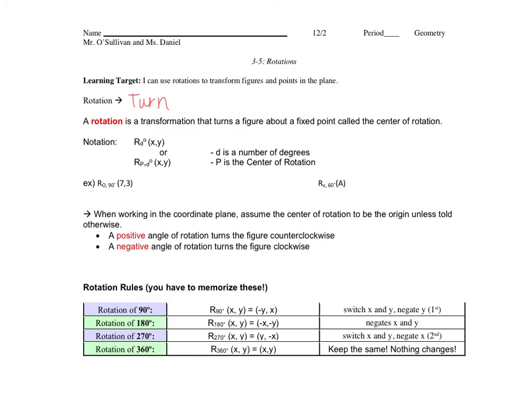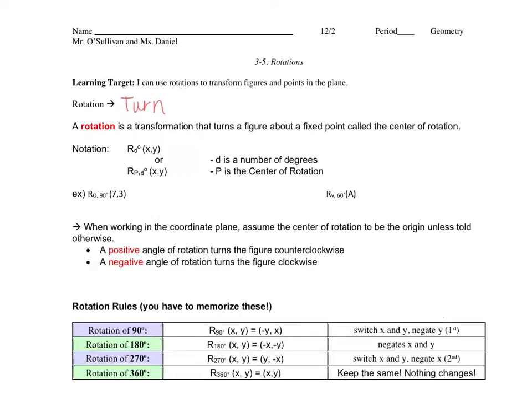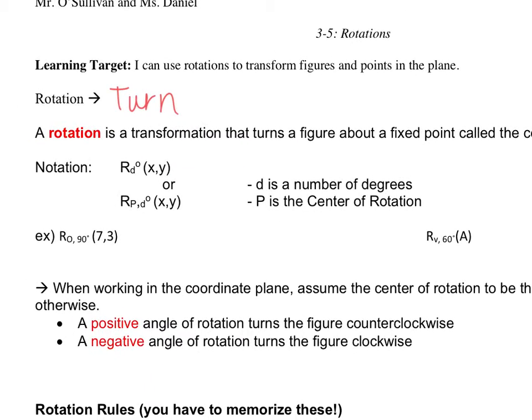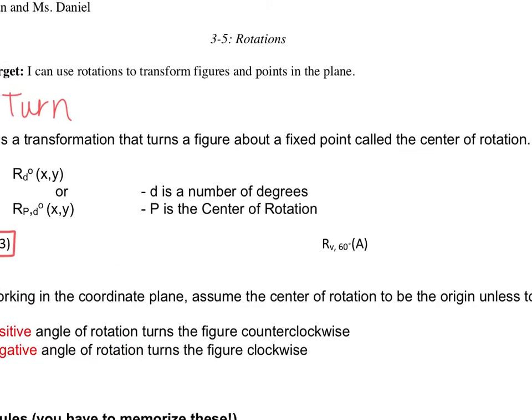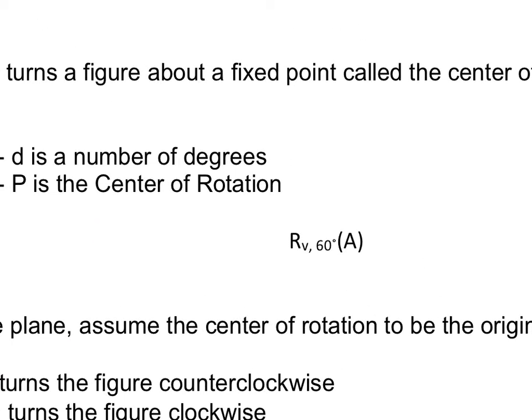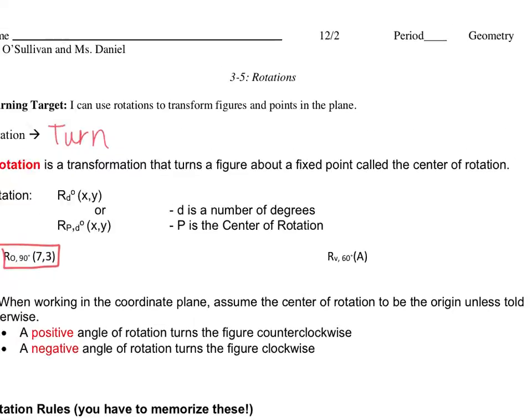So a rotation is a transformation that turns a figure about a fixed point called the center of rotation. Here's some notation. D is the number of degrees and P is the center of rotation. So when I go down here, what I'm saying with this example is I want to rotate the point (7,3) 90 degrees about the origin. What I'm saying here is that I want to rotate the point A 60 degrees about point V.